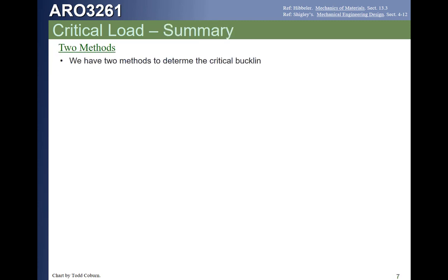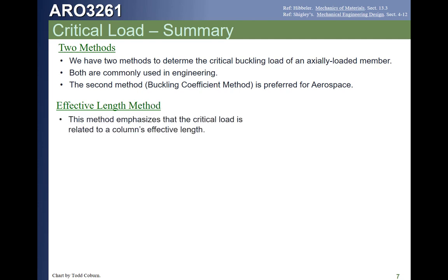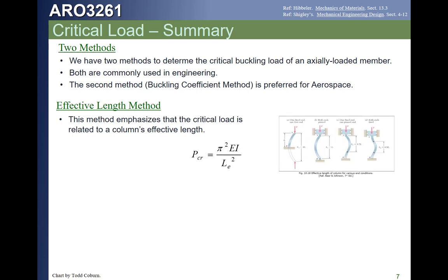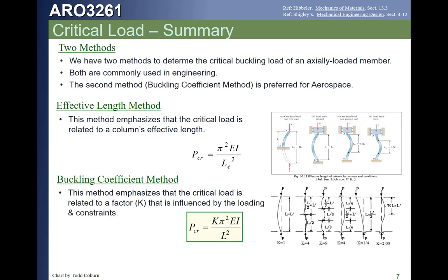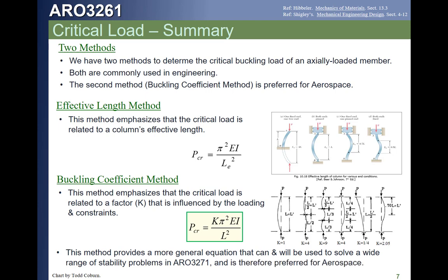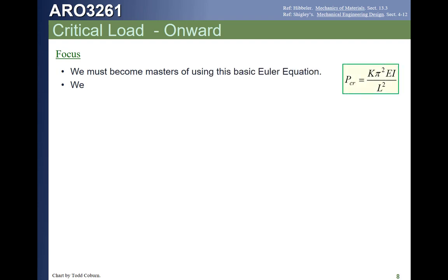So we have two methods to calculate critical load for an axially loaded member. Both are commonly used, but the second method — the buckling coefficient method — is more common throughout aerospace. Method one is the effective length method using Euler's equation with an effective length term. Method two uses the buckling coefficient k for each constraint condition. We're going to focus on method two in both Aero 3261 and Aero 3271, so we need to master it. This lecture covers buckling of thin columns.